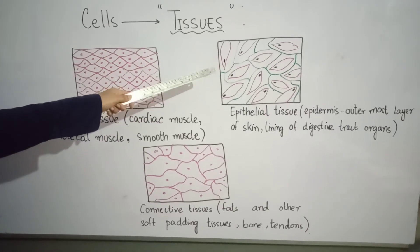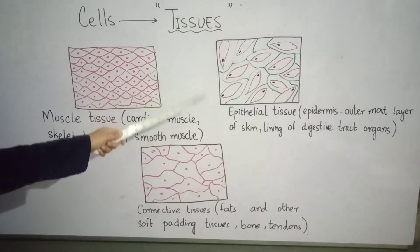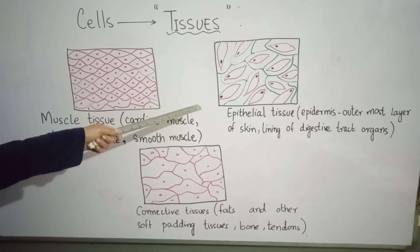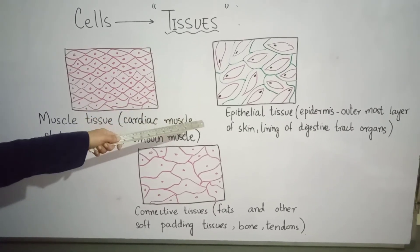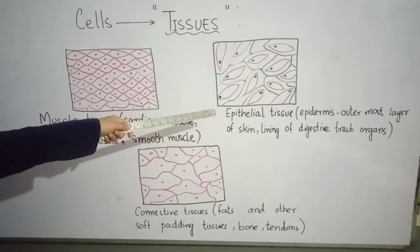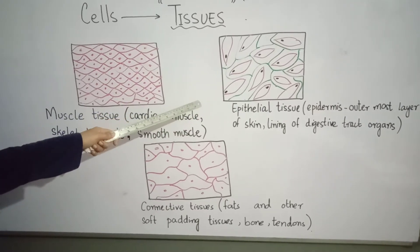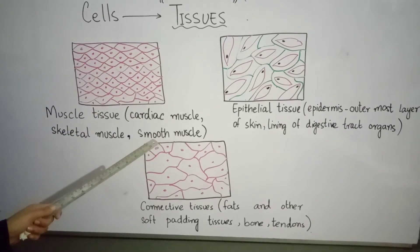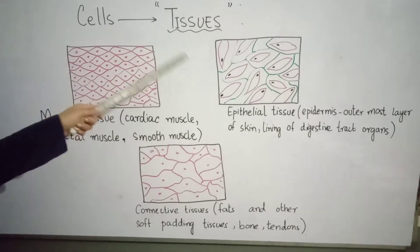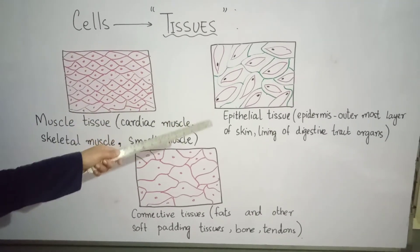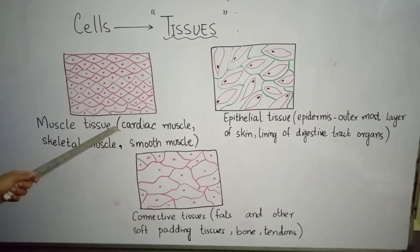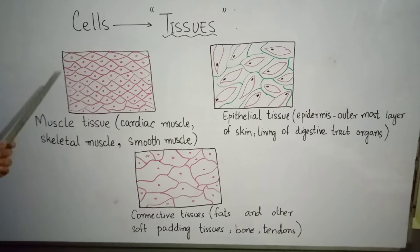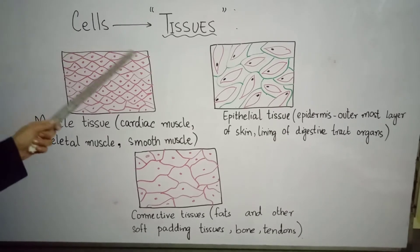Similarly, the organs of our digestive tract — when we eat food and digestion happens — the tissues of those organs are also called epithelial tissues. Now it is becoming clear that digestive tissues will only do digestion. Skin tissues will only do skin work. Heart muscle tissues will only do heart work. So, same type of cells combine to form tissues.